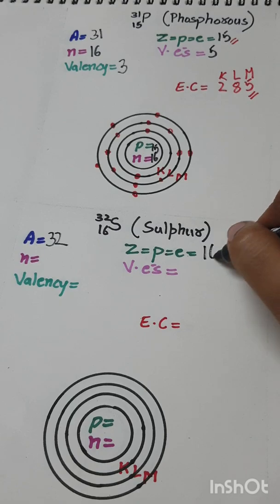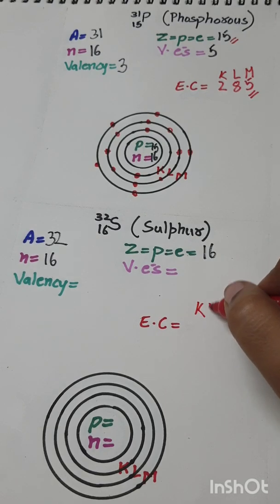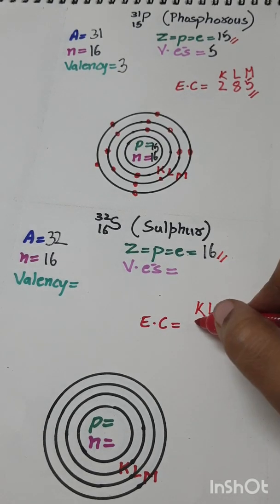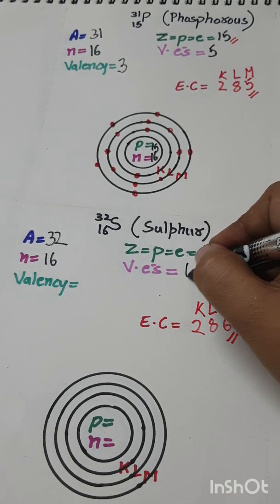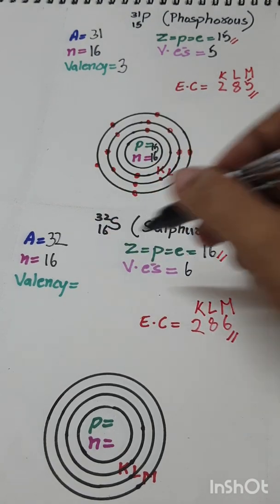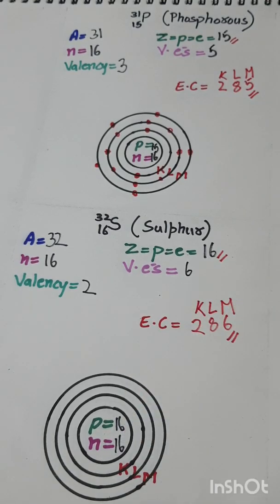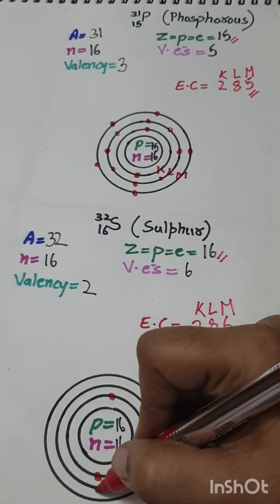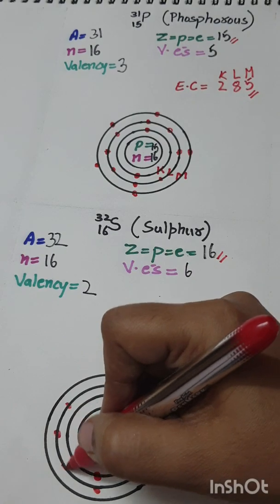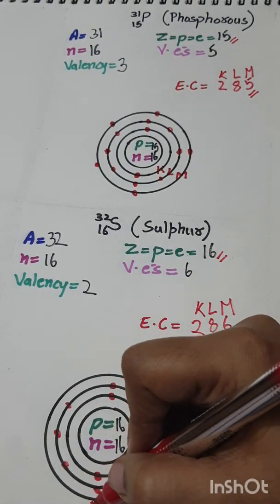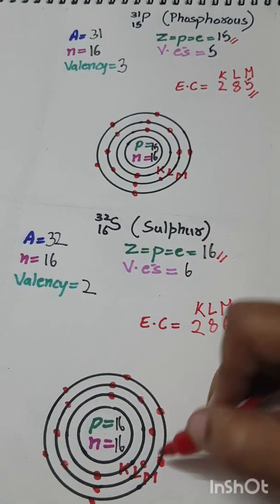Sulfur: A = 32, Z = 16, n = 32 − 16 = 16. Electronic configuration — K shell: 2, L shell: 8, leaving 6 electrons for the M shell. EC is 2, 8, 6. The outermost M shell has 6 valence electrons, so valency = 8 − 6 = 2. Number of protons = 16, number of neutrons = 16.